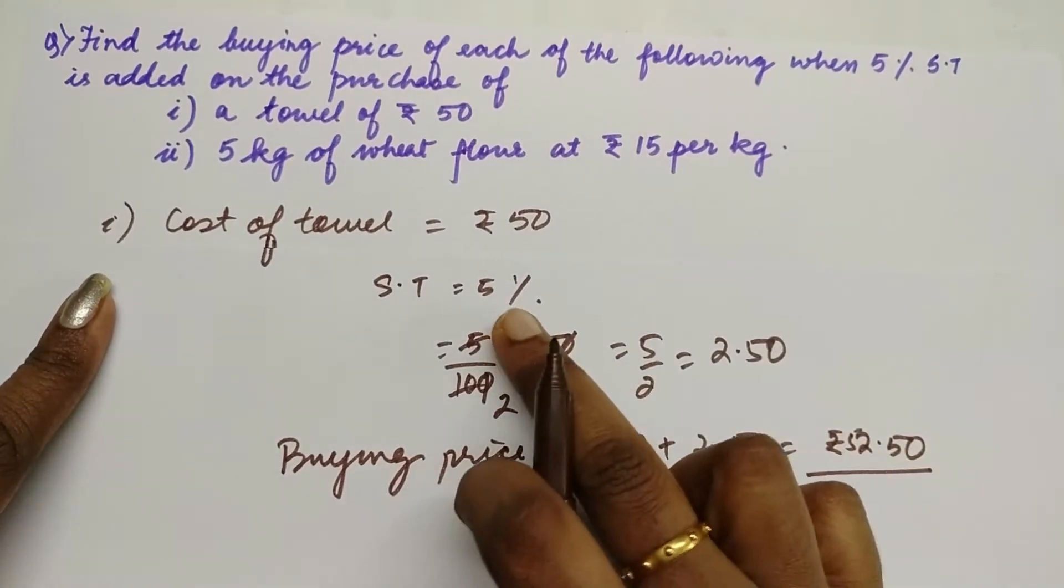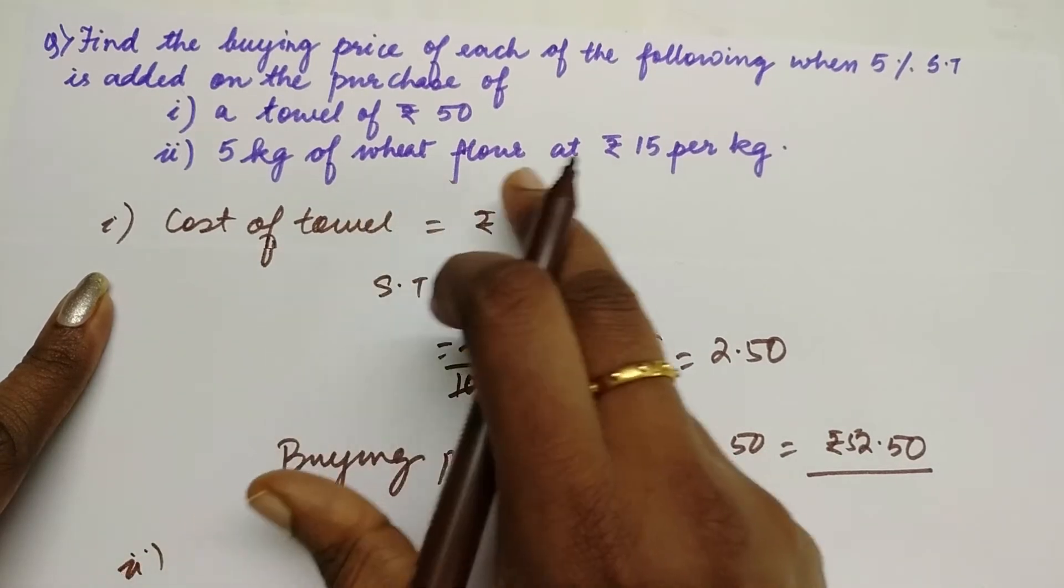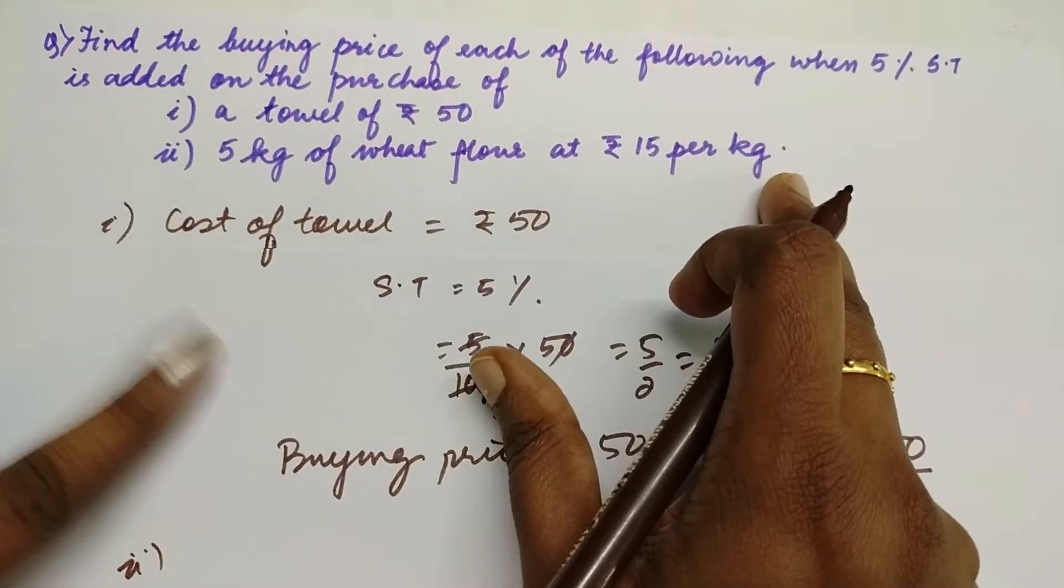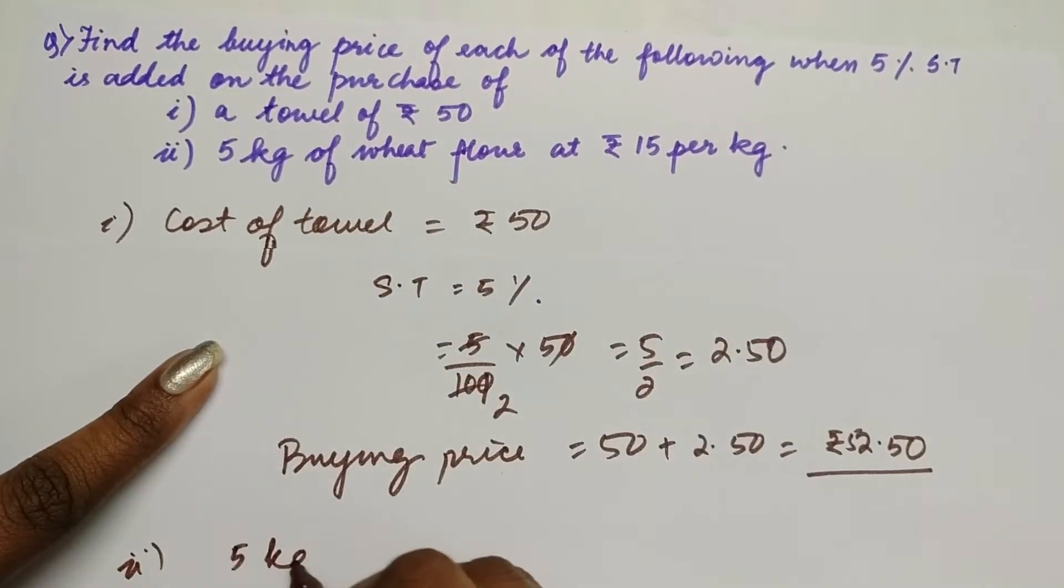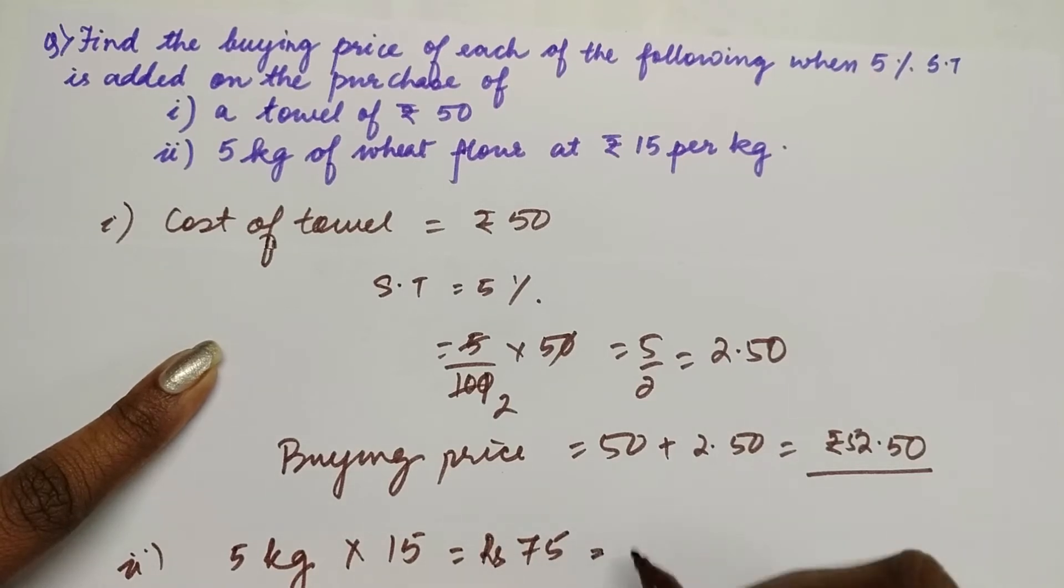Similarly, 5 kg of wheat at ₹15 per kg. So 5 kg we are buying and cost of 1 kg is ₹15, so total cost is ₹75. This is the cost of 5 kg wheat flour.